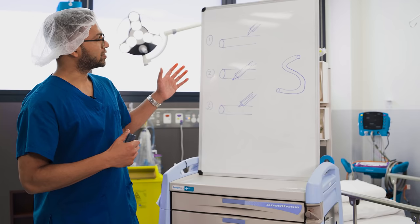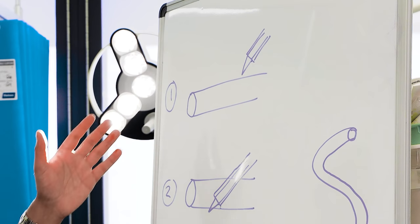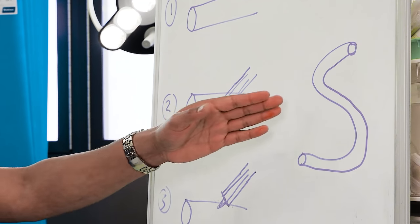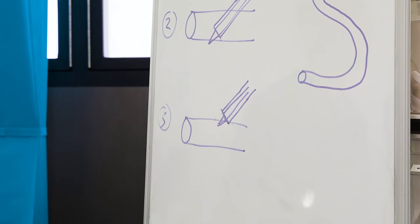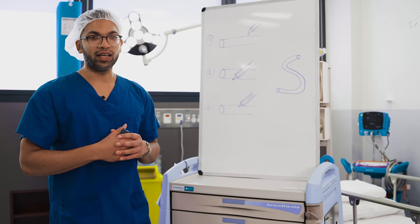So these are the three methods. First of all, you don't even get the vein, there's no flashback at all. The second method is you go through one of the other walls, whether it's the deep wall or a side wall. And finally, you don't advance the cannula enough. So what's happening is you're pushing the cannula into the wall of the vein and pushing the vein away.